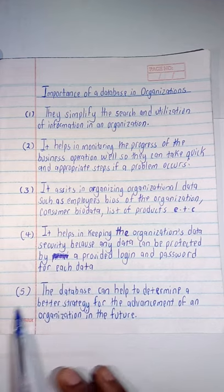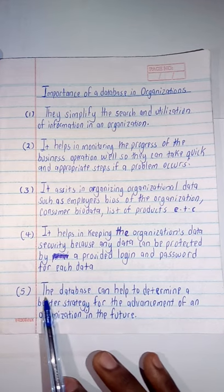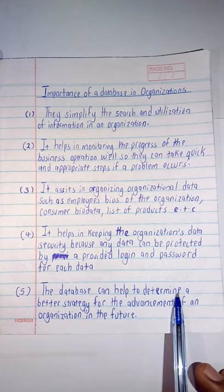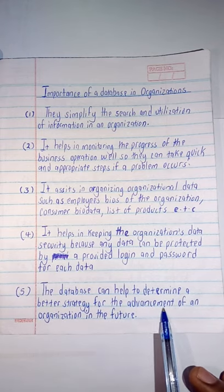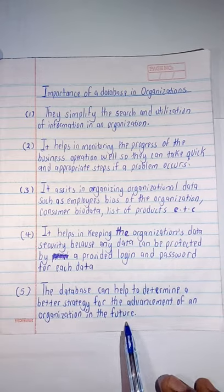Then importance number five: the database can help to determine a better strategy for the advancement of an organization in the future.